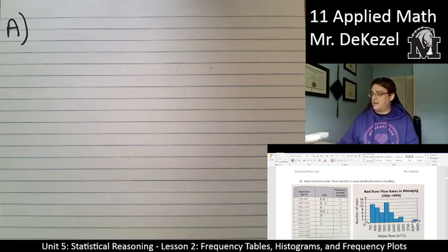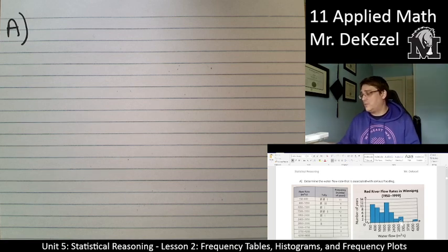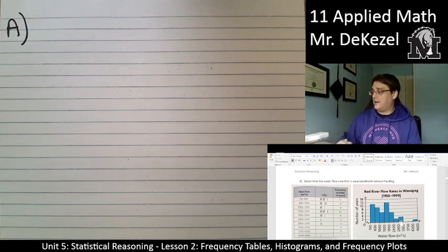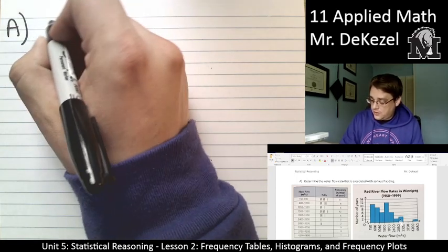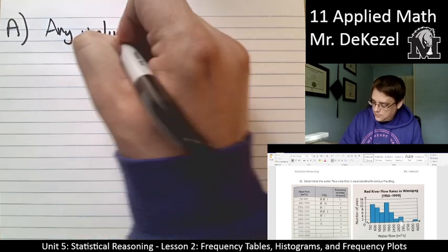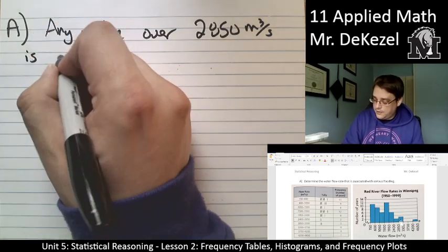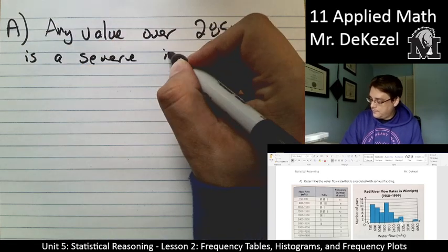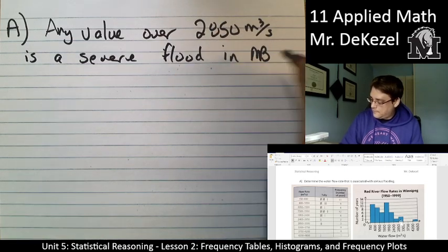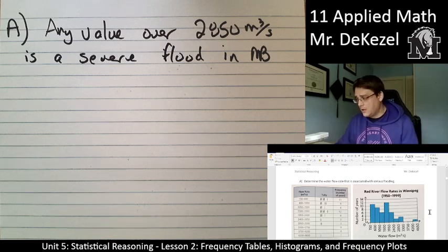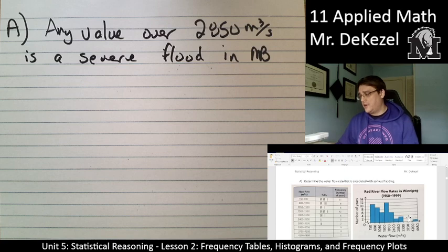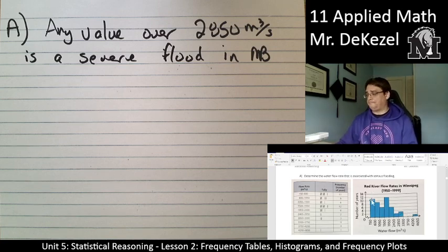So if we have one that is over 4,200, if we go all the way down to 2,850, we have three in that range. So one, two, three, plus the one that's way out here gives us four. So it looks like anything that's over 2,850 for a flow rate is a severe flood. So any value over 2,850 meters cubed per second is a severe flood in Manitoba. And it told us that there were four floods that were severe, and I found four tallies that go above that.